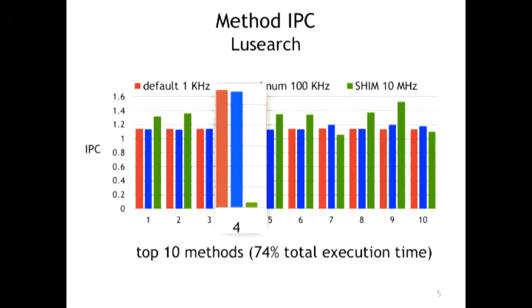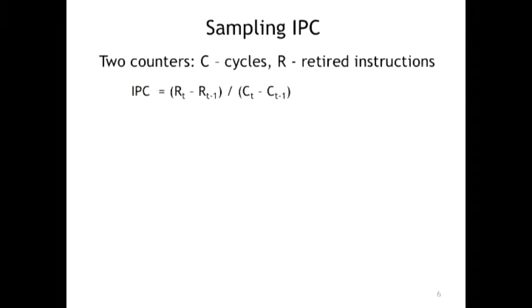Flush is doing some memory operation — it's blocking memory. To sample IPC, you normally set up two counters: one counts how many cycles have passed, another counts how many instructions have been done, and then you calculate the IPC. Quite simple.